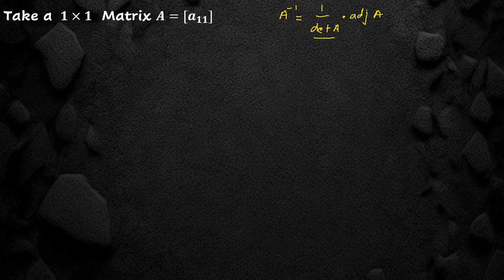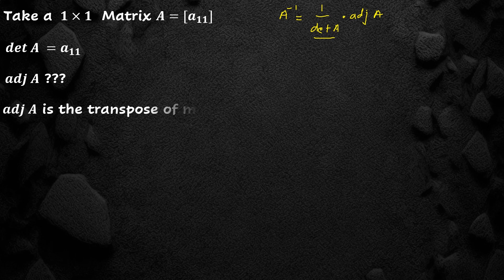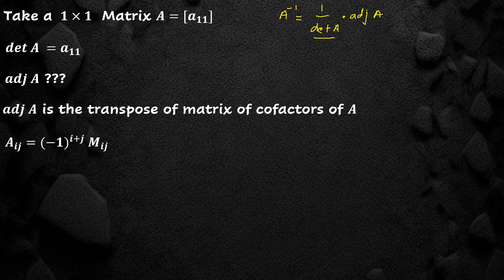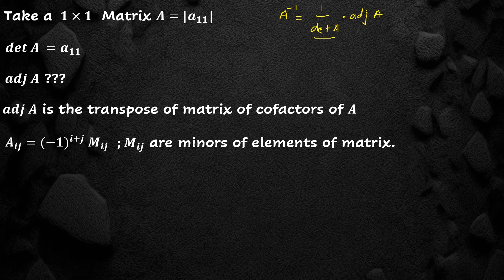The determinant of A of this matrix by definition is A11. We find the adjoint of A. As we know, adjoint of A is the transpose of the matrix of cofactors of A, and the cofactors are defined as Aij equal to minus 1 raised to power i plus j into Mij, where Mij are minors of the elements of matrix A.